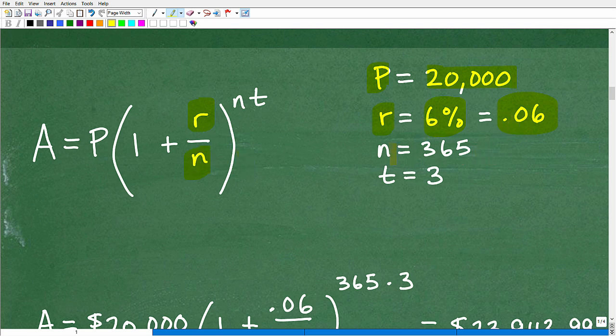N is 365 and T is three years. We're just going to plug in everything where it needs to go into this formula.